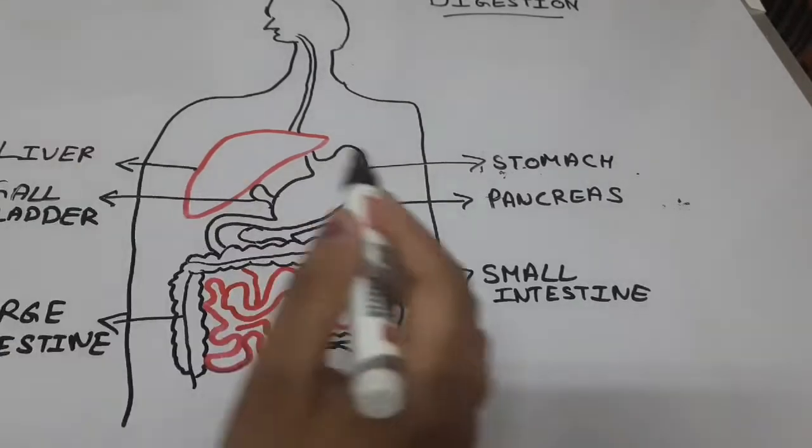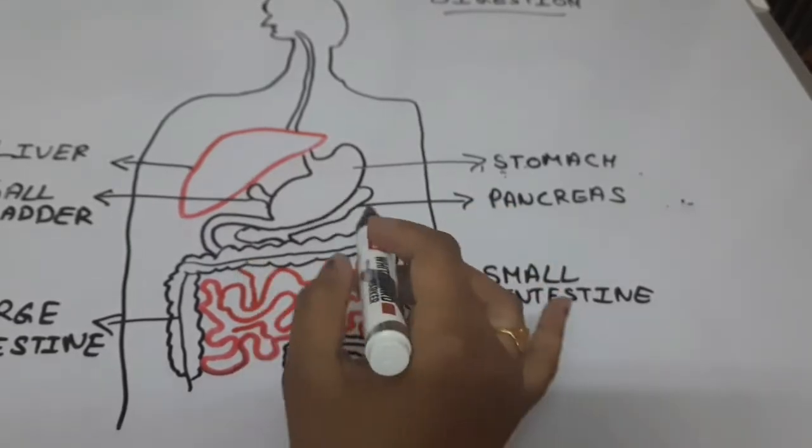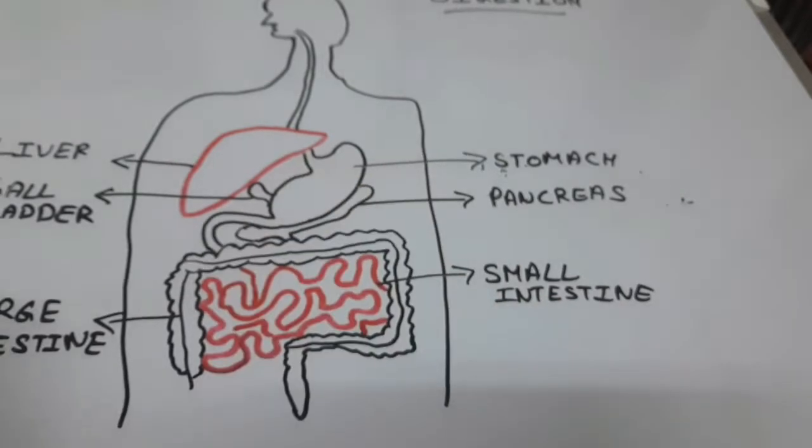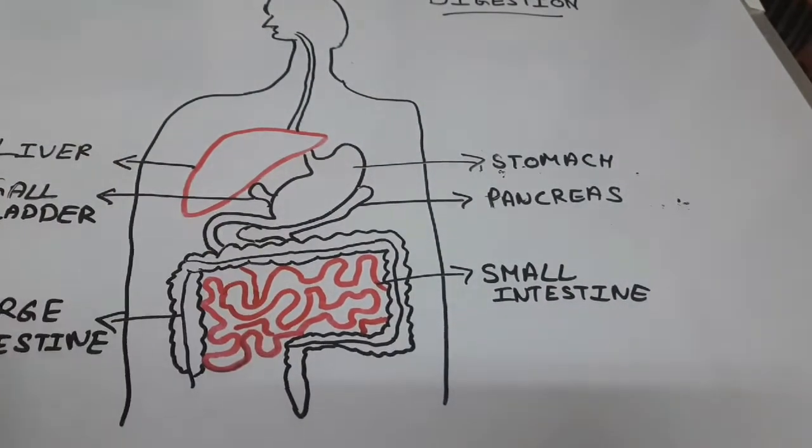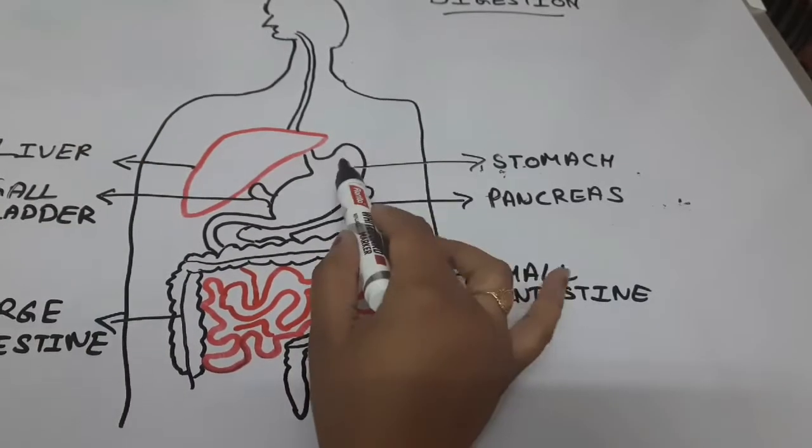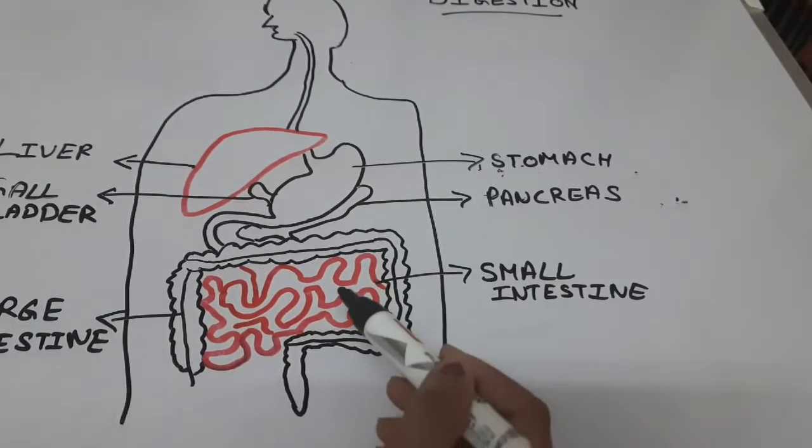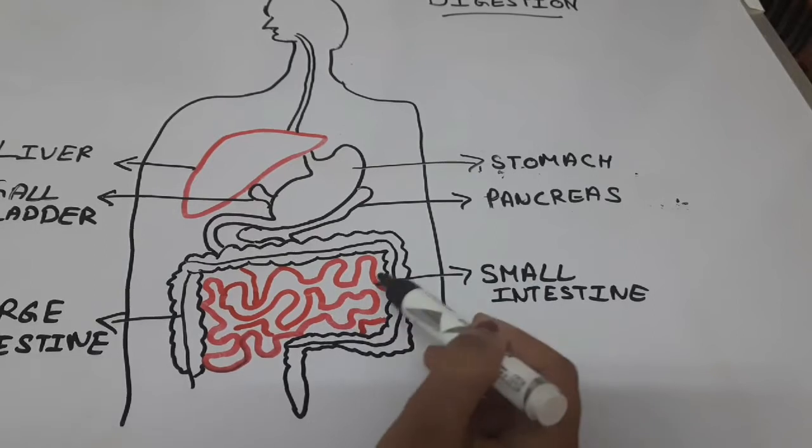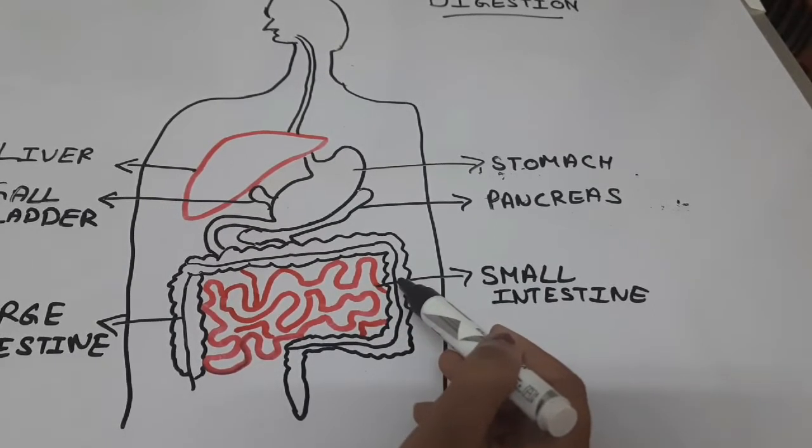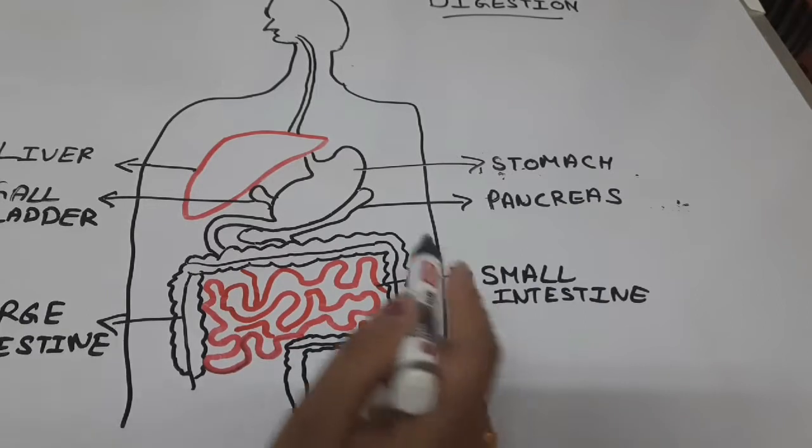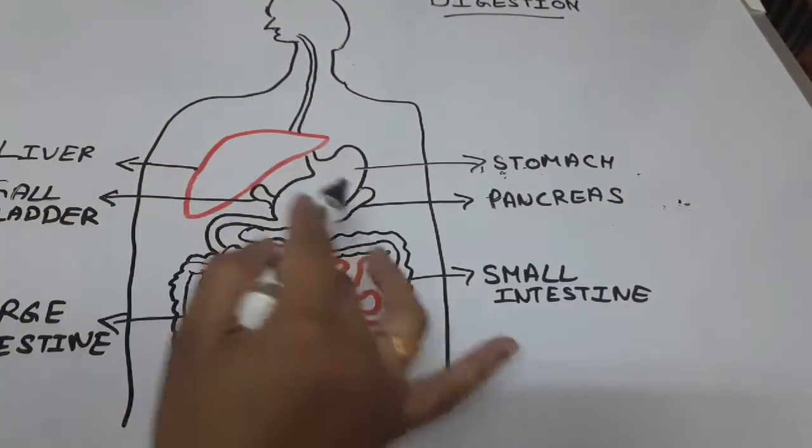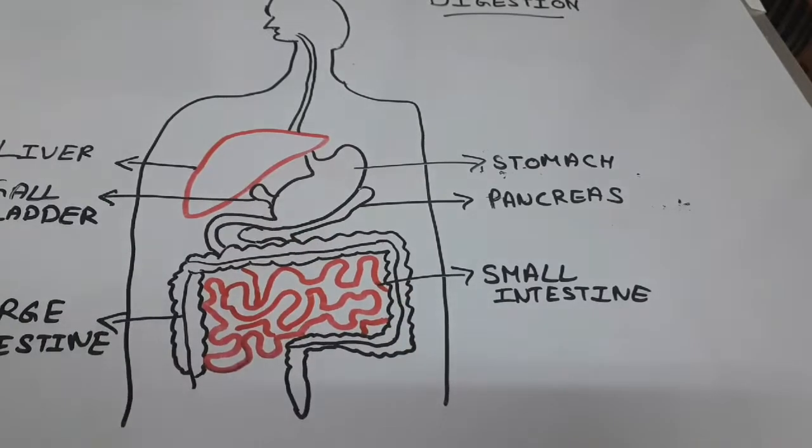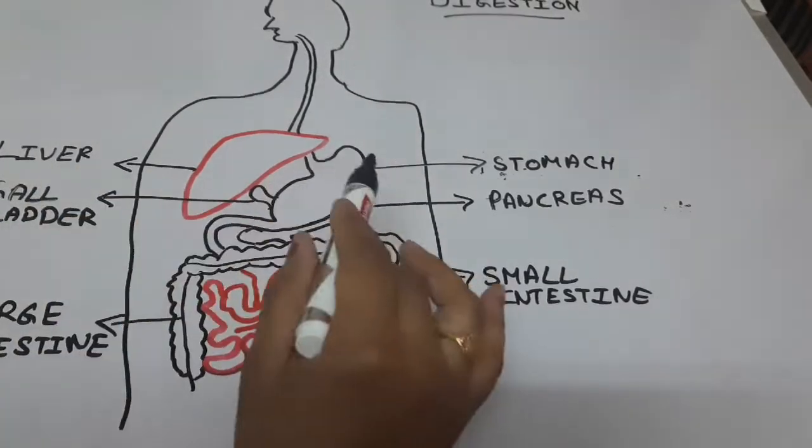Now first of all, let me tell you the organs which actively take part in the process of digestion. Digestion actually happens in the stomach and the small intestine, and a little bit in the large intestine also. And the organs which help in digestion are liver, pancreas, and gall bladder.